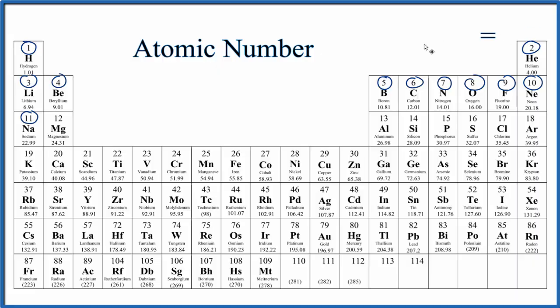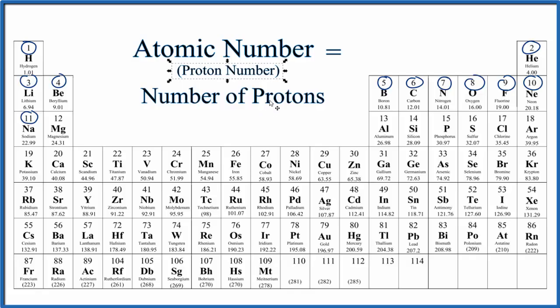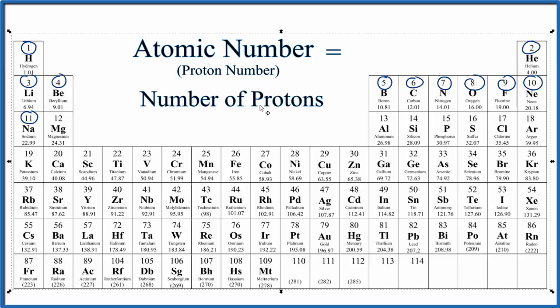What's nice about the atomic number is it's equal to the number of protons. In fact, that's the definition of the atomic number. It's the number of protons. Sometimes the atomic number is called the proton number because it's the number of protons that we find in each element.